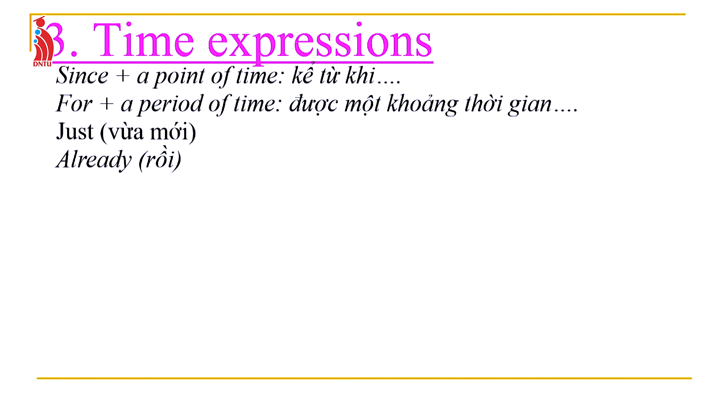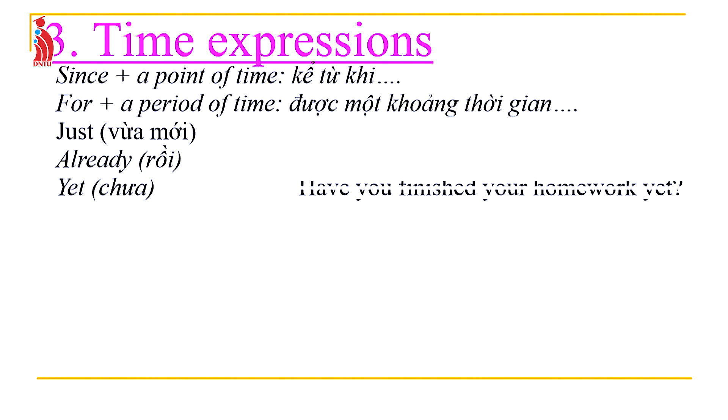'Already' means 'rồi' (already done), and its position is between the auxiliary and the past participle, or at the end of the sentence. 'Yet' means 'chưa' (not yet) and is typically used in negative sentences and questions, placed at the end of the sentence. For example: 'Have you finished your homework yet?'